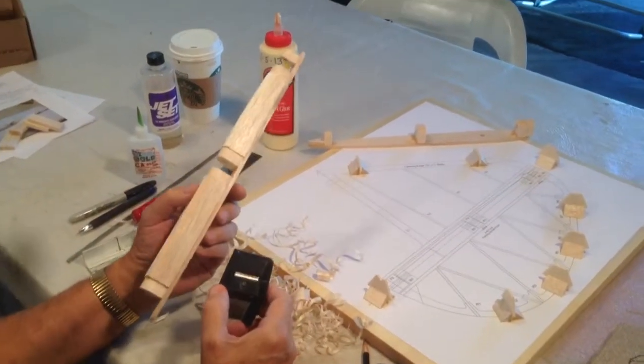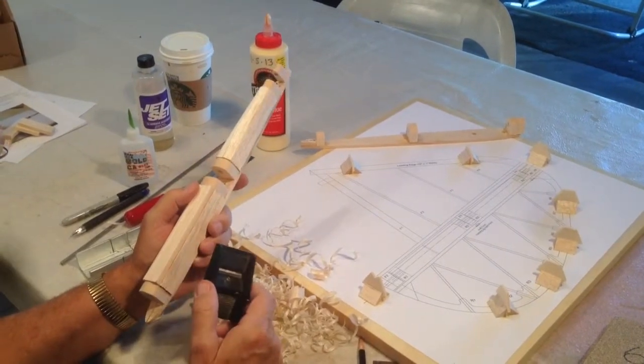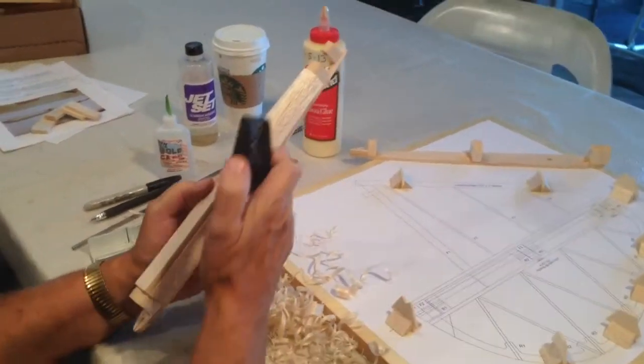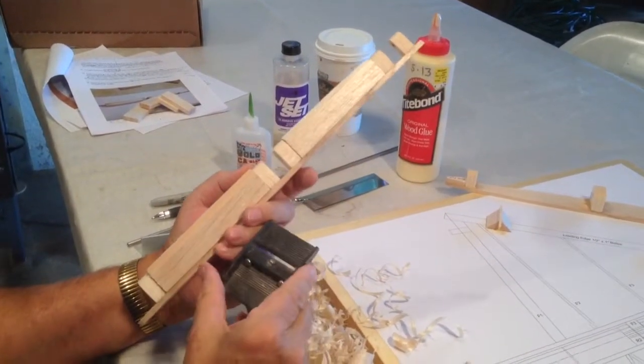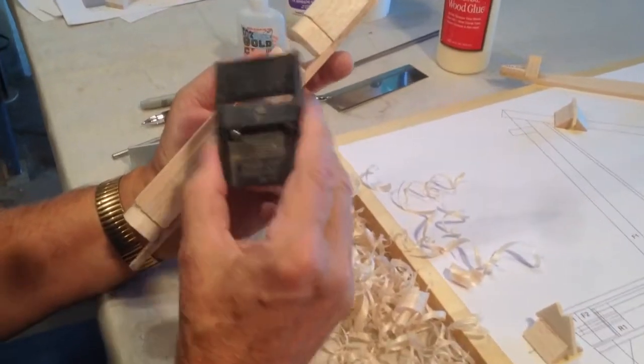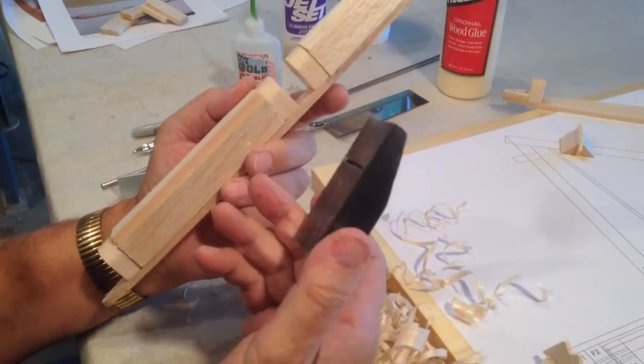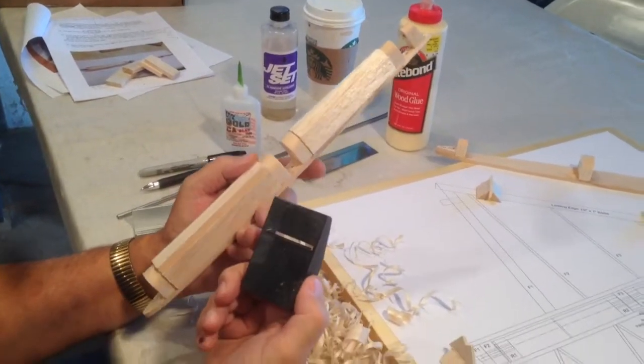Okay, well what we're going to do is just plane down this rudder spar and all this fill material. I'm just using a Master Airscrew razor plane. I've used different ones, but this is the best, and you can probably get it from Tower Hobbies. I've had this for 20 years.